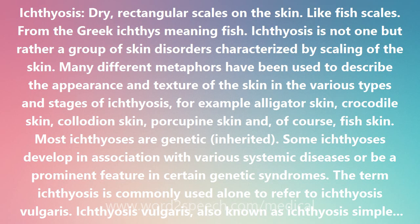The term ichthyosis is commonly used alone to refer to ichthyosis vulgaris, also known as ichthyosis simplex. It is inherited as an autosomal non-sex-linked trait and is characterized by scaly, fish-like areas of skin. The first scaly skin problems usually appear after three months of age. The palms and soles are often affected. Areas that tend to be spared include the axillae (armpits), the antecubital fossa (the inside area at the bend of the elbow), and the popliteal fossa behind the knee.